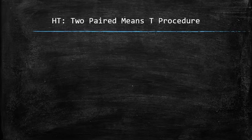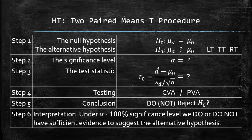We will use the following template to perform the hypothesis testing. In step 1, we will set up the hypothesis. In step 2, we will identify the significance level. In step 3, we will find the test statistic using the formula. In step 4, we will perform either the critical value approach or p-value approach to test the claim. In step 5, we will draw the conclusion, and finally in step 6, we will interpret the results.